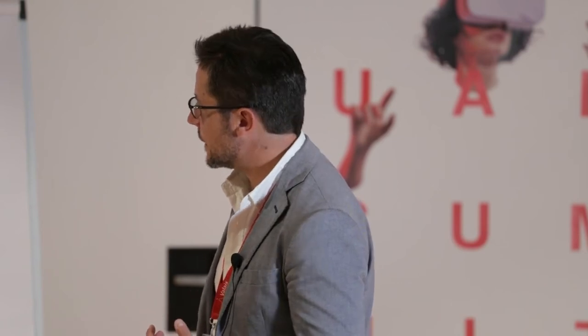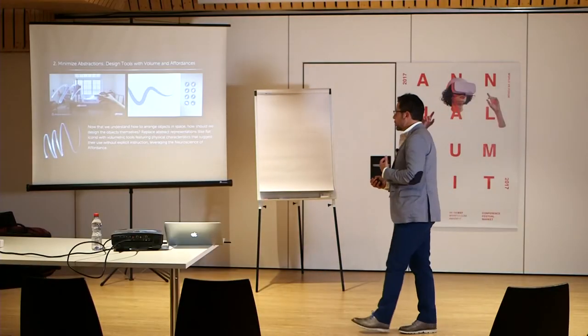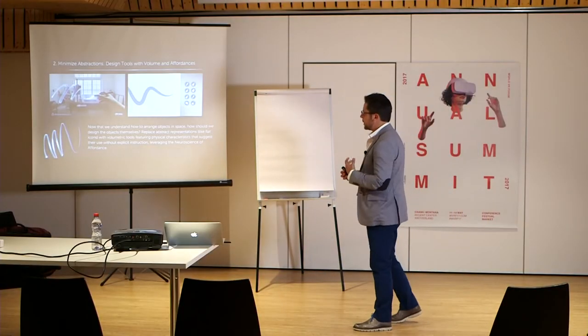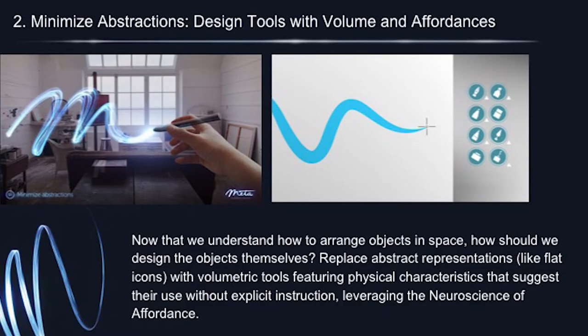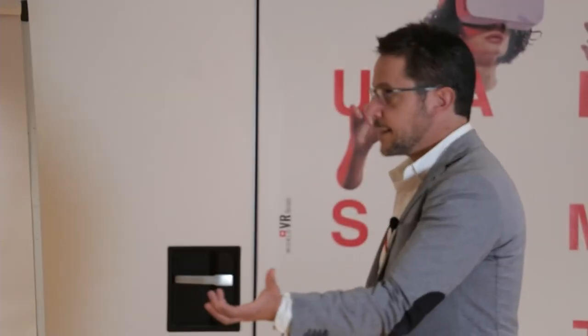Principle number two: Minimize distractions — design tools with volumes and affordances. Now that we understand how to arrange objects in space, how should we design the objects themselves? We advocate replacing abstract representations like flat icons with volumetric tools featuring physical characteristics that suggest their use without specific instructions, leveraging the neuroscience of affordance.